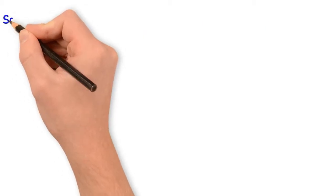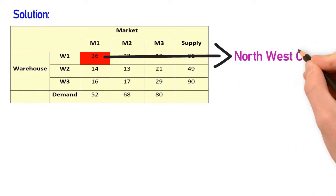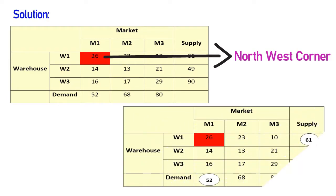To start with the solution, we follow the first step: select the Northwest Corner. Here the Northwest Corner is the cell with address W1,M1, shown in red. For this selected cell, the supply value is 61 and the demand value is 52.